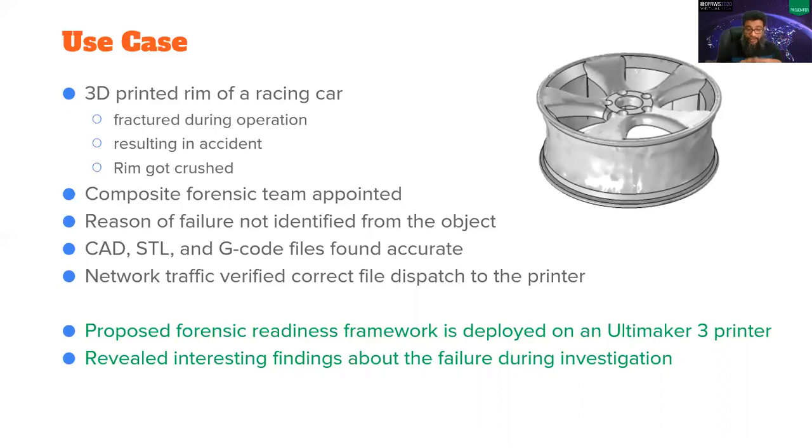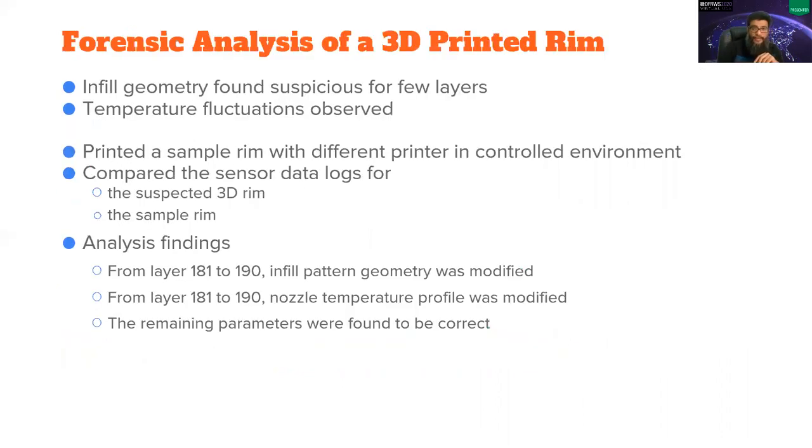So luckily the printers were deployed with our framework and they reviewed some interesting findings. So when they analyzed the logs from our framework, there was some suspicious infill geometry found in few layers and there were some temperature fluctuations observed. So the forensic team came up with an idea of reprinting the same file, same design file in a controlled environment. And then they compared the logs of the sample print with the suspected print. And the findings are as below. For 10 layers, like the print was around 225 layers. For 10 layers, the infill pattern geometry was modified and the nozzle temperature profile was also modified but other parameters were pretty much correct.